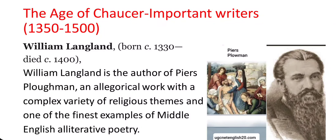Moving on to another prominent figure of this era, we have William Langland. Langland is best known for his allegorical poem Piers Plowman. This work is a critical piece of Middle English literature and is considered one of the earliest alliterative poems. Piers Plowman takes readers on a spiritual journey through the allegorical character Piers, as he seeks to lead a righteous life. Langland's work delves into themes of morality, society, and the human soul, making it an essential read for anyone studying this era.